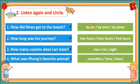Question 3: How many cousins does Lan have — 2, 6, or 8? Question 4: What was Phong's favorite animal — crocodiles, lions, or bears? Listen again and circle your answers.